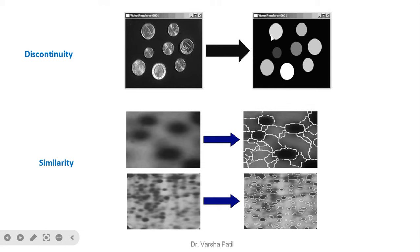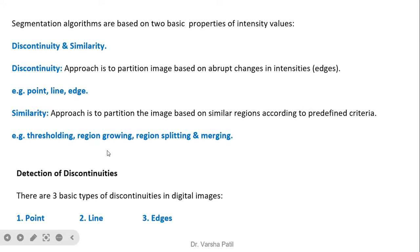Segmentation algorithms are based on two basic properties of intensity values: discontinuity and similarity. The discontinuity approach partitions an image based on abrupt changes in intensity — that is, edges or high frequency signals such as points, lines, and edges.